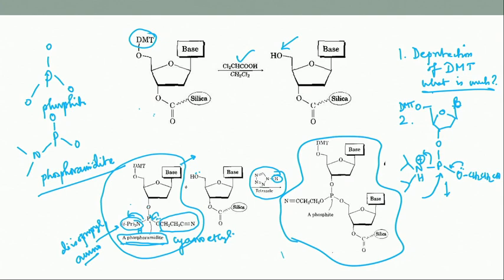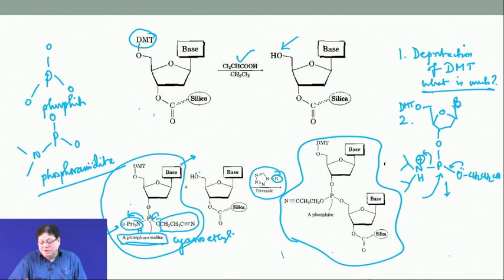This coupling stage is called the phosphoramidite method. This strategy was developed by an Indian-born scientist, Professor Har Gobind Khorana, who was the first person to develop the synthetic protocol for oligonucleotides. But at this point you still do not have a complete oligonucleotide.